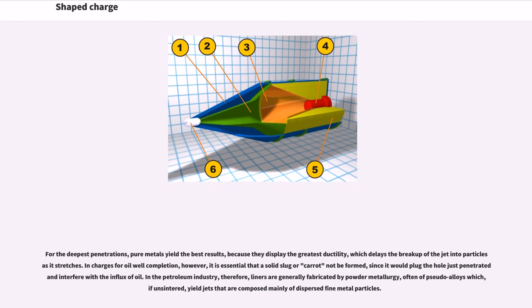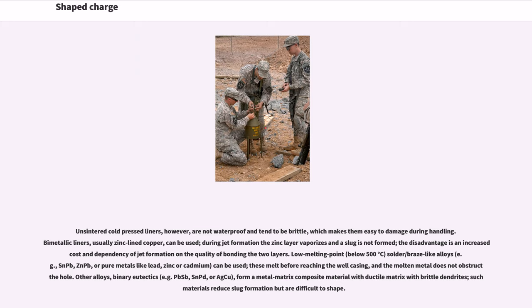In charges for oil well completion, however, it is essential that a solid slug or carrot not be formed, since it would plug the hole just penetrated and interfere with the influx of oil. In the petroleum industry, therefore, liners are generally fabricated by powder metallurgy, often of pseudo-alloys which, if unsintered, yield jets that are composed mainly of dispersed fine metal particles. Unsintered cold-pressed liners, however, are not waterproof and tend to be brittle, which makes them easy to damage during handling. Bimetallic liners, usually zinc-lined copper, can be used. During jet formation the zinc layer vaporizes and a slug is not formed. The disadvantage is an increased cost and dependency of jet formation on the quality of bonding the two layers.